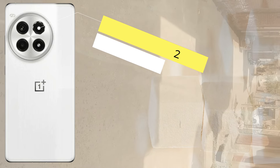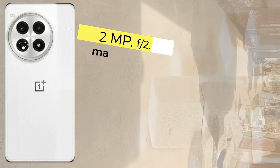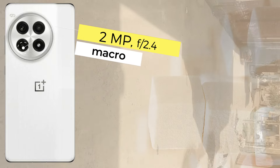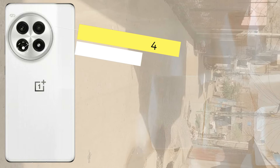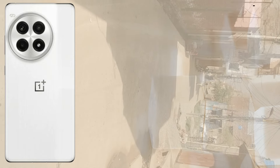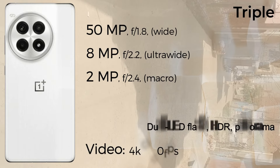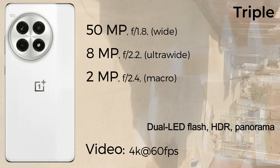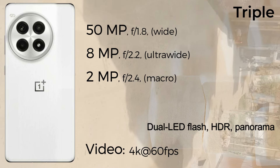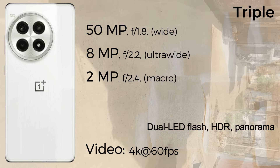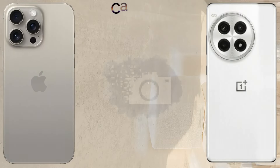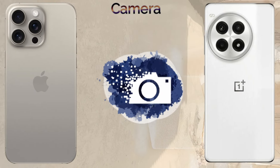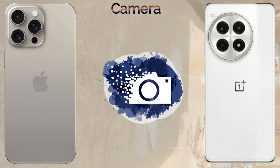For selfie cameras, the iPhone 15 Pro Max comes with a dual camera setup: a 12MP main sensor and an SL3D biometric sensor, recording 4K at 30fps video. The OnePlus A3 Pro comes with a 16MP selfie camera with 1080p 30fps video recording.